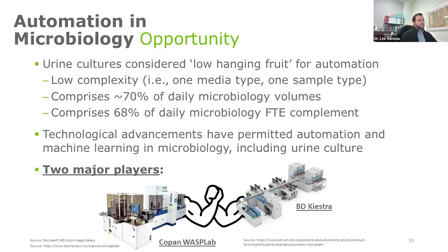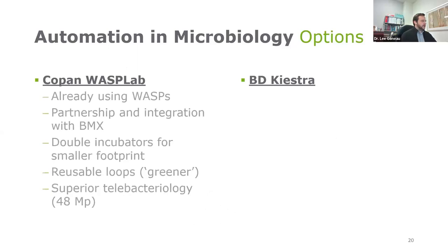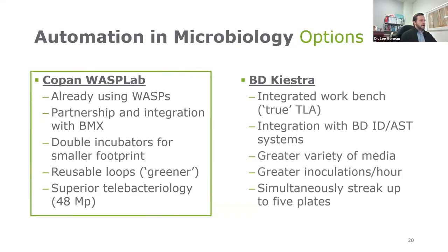When we look at the players for automation and AI, there are really two major players: Copan and WASP Lab on the left, and the BD Kiestra on the right. These are the workhorses for total lab automation in microbiology. We put the two in a room, had them arm wrestle it out, and at the end of the day, we decided to go with the WASP Lab in our lab. Both technologies are really great and very comparable. For us, the decision was that we already had a lot of the pre-analytical modules for WASP in place, so it made natural sense to implement the WASP Lab.